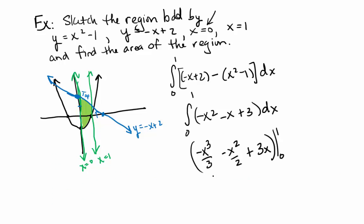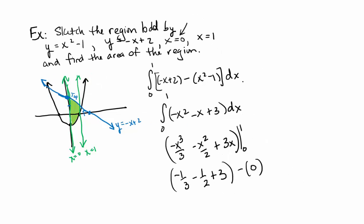Plugging in 1, we have negative 1/3 minus 1/2 plus 3. Plugging in 0, we just get 0. The answer is 13/6. I hope you found this video useful — if you did, please remember to like it.